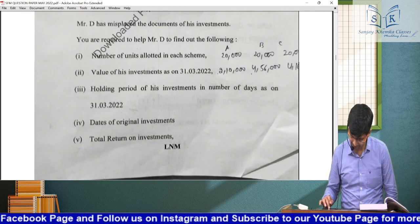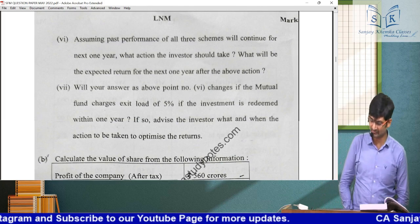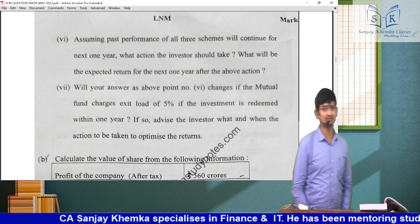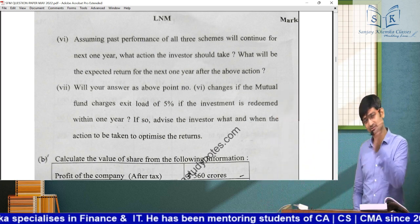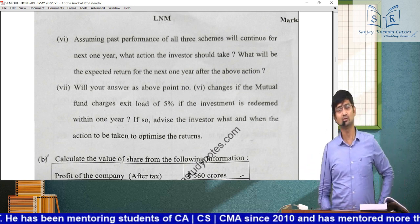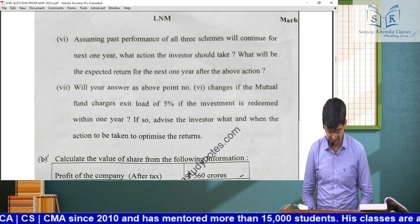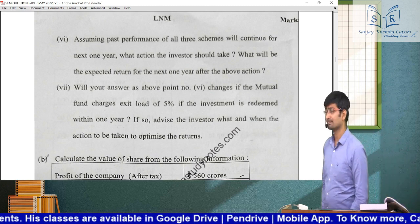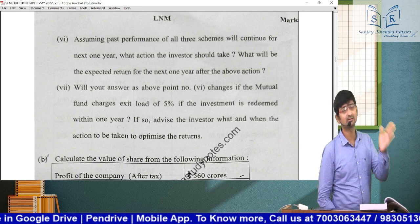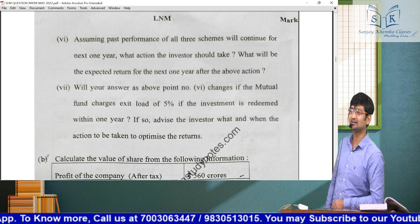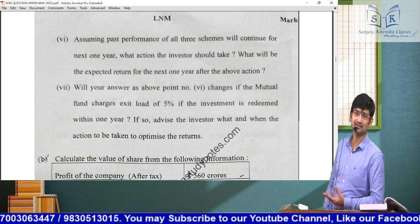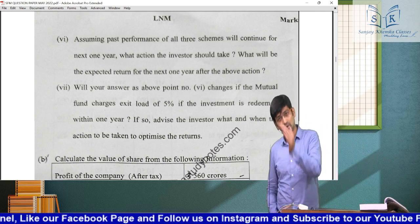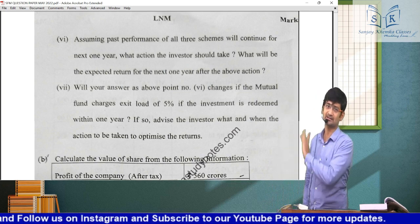There were two more parts: assuming past performance of all three schemes continues for next one year — what action should the investor take and what will the expected return be? Normal calculation — past return will be similar next year, so what return comes from your investment going forward. Then: will your answer change if the mutual fund charges an exit load of 5% if redeemed within one year? Advise when and what action should be taken to optimize returns — if within one year, exit load applies, so hold longer to avoid it.